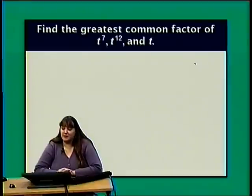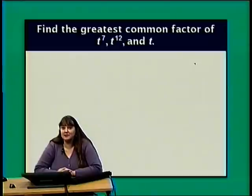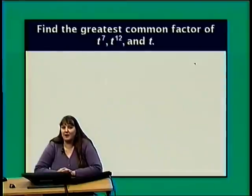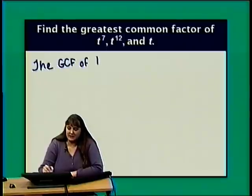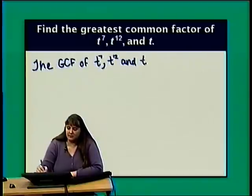Now let's find the GCF of t to the 7th, t to the 12th, and t. These are all powers of t, so I'm looking for the smallest exponent. I have exponents of 7, 12, and an implied exponent of 1 on that t. One is smaller than 7 and 12, so the GCF of t to the 7th, t to the 12th, and t is just t.